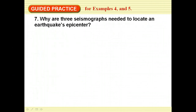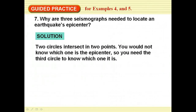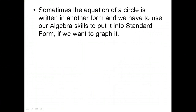Why are three seismographs needed to locate an earthquake's epicenter? Two circles could intersect in two points if they cross, so you wouldn't know which of the two points is the epicenter. It's the third circle that confirms which point all three share.